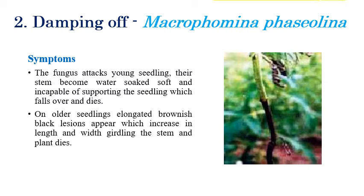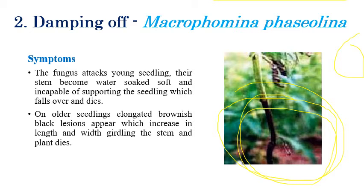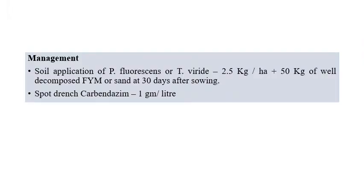The second disease is damping off, caused by Macrophomina phaseolina. The symptoms appear especially in the seedling stage — water-soaked lesions and softening of seedlings occur, causing seedlings to fall down and eventually die. This damping off is mainly seen in nursery stages. For management, soil application of Pseudomonas fluorescens (a bacterial biocontrol agent) and Trichoderma viride (a fungal biocontrol agent) at 2.5 kg per hectare, along with 50 kg of well-decomposed farm yard manure 30 days after sowing, is recommended. Soil drenching with Carbendazim at 1 gram per liter can also be recommended.